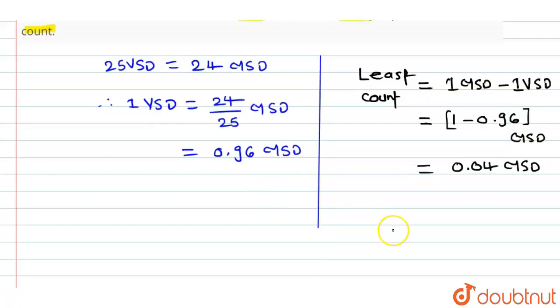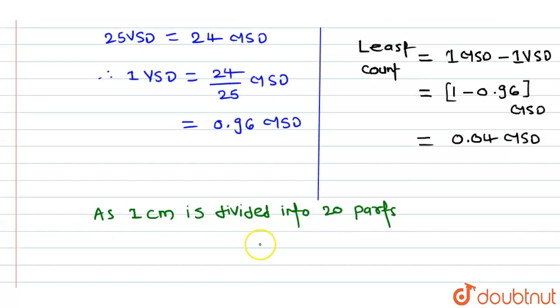Now, according to the question, 1 centimeter is divided into 20 parts. Therefore, 1 MSD will be equal to 1 by 5 centimeter, that is 2mm.